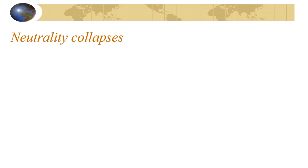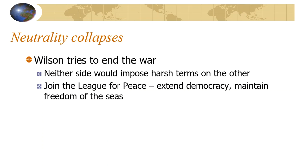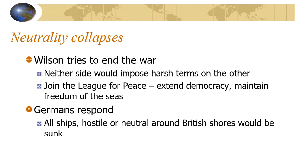So let's focus on how the United States gets involved. Neutrality collapsed. Wilson tried to end the war by saying neither side would impose harsh terms, and that they would join a League for Peace — a way to extend democracy and maintain freedom of the seas. The Germans responded by declaring that all ships, hostile or neutral, around British shores would be sunk. This is not only a direct violation of the Sussex Pledge, but also a direct violation of the rules of warfare. If a ship is neutral, especially if it's only carrying passengers and not military weapons, it should be protected. The Germans declared all ships to be the enemy, thus drawing the Americans in.